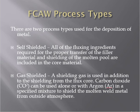There are two FCAW process types used for metal deposition. Self-shielded FCAW includes all fluxing ingredients required for filler metal transfer and shielding within the core material of the electrode. Gas-shielded FCAW uses an additional shielding gas — such as carbon dioxide, or argon in a specified mixture — supplied externally in addition to the shielding from the flux core, to protect the molten weld pool from the atmosphere.